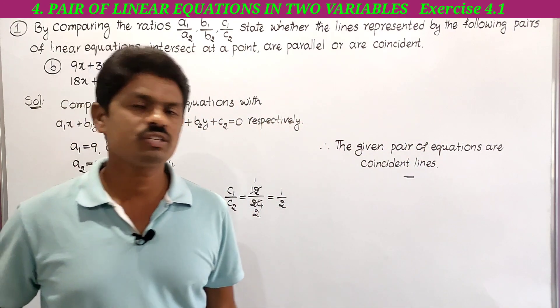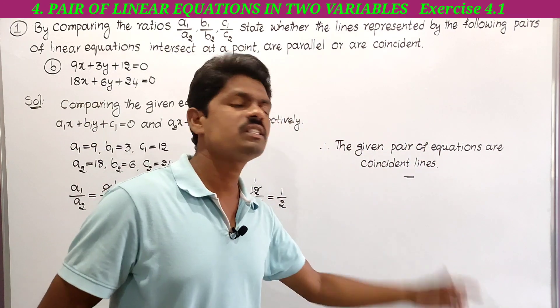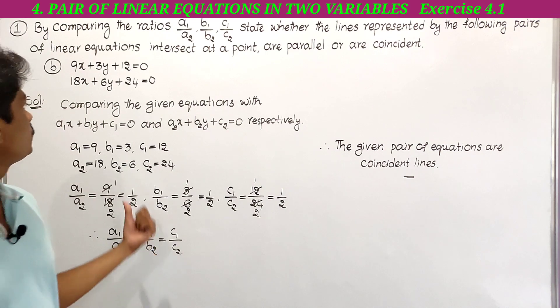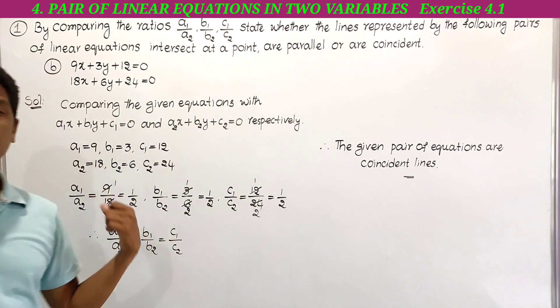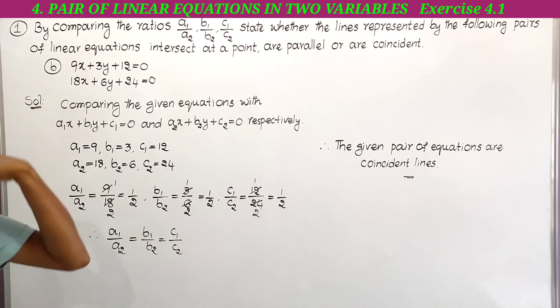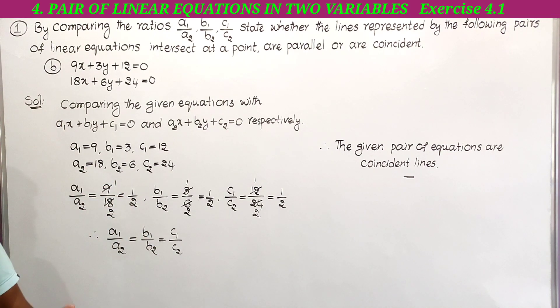Therefore the given pair of equations are coincident lines. This is the second part (b) in the first question. Next, we have to solve part (c).